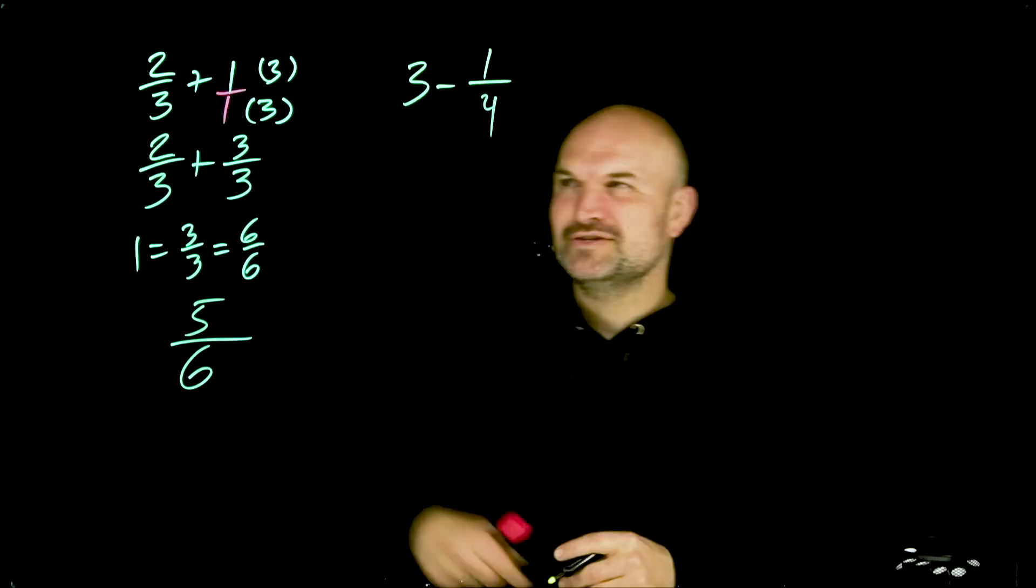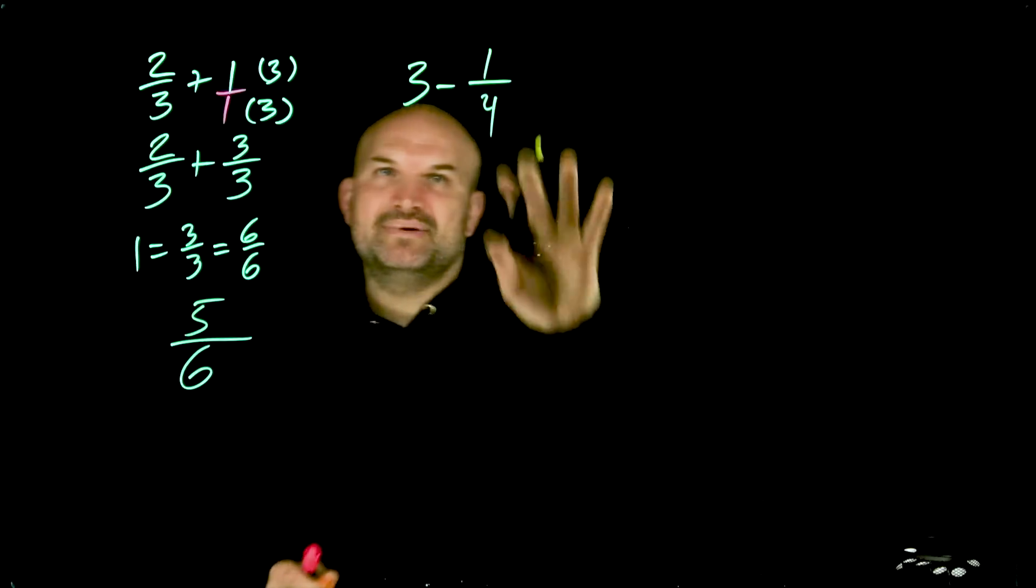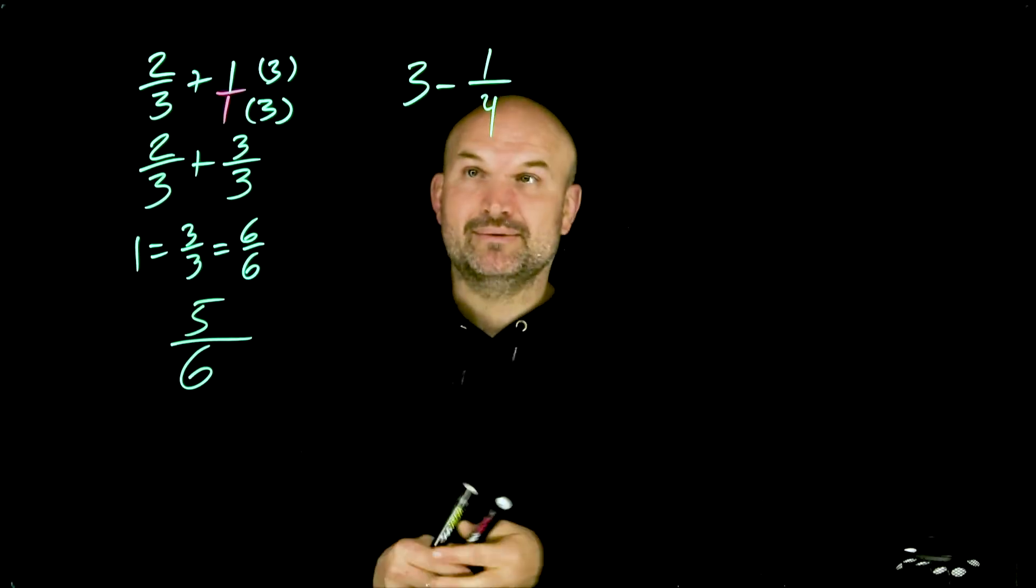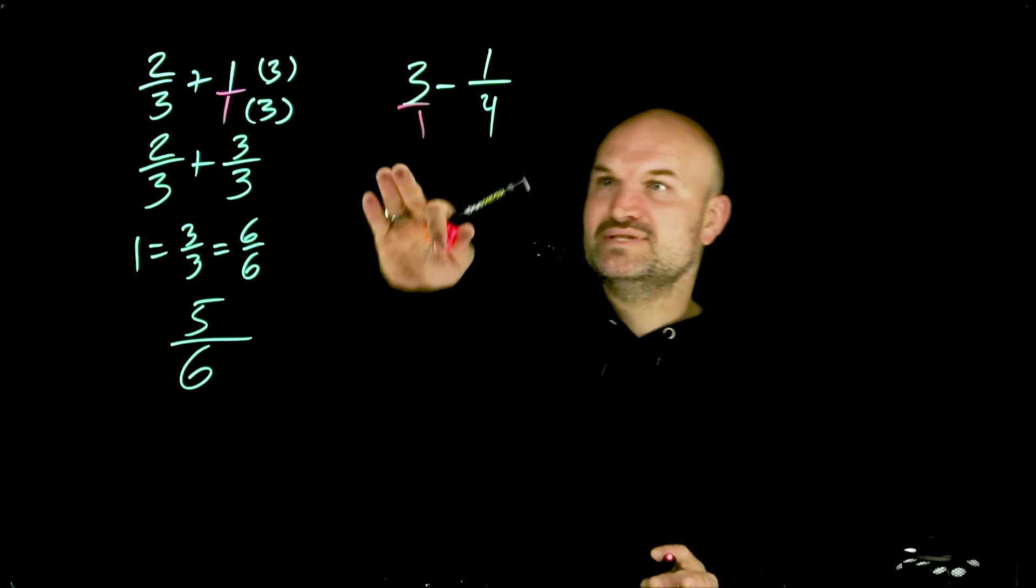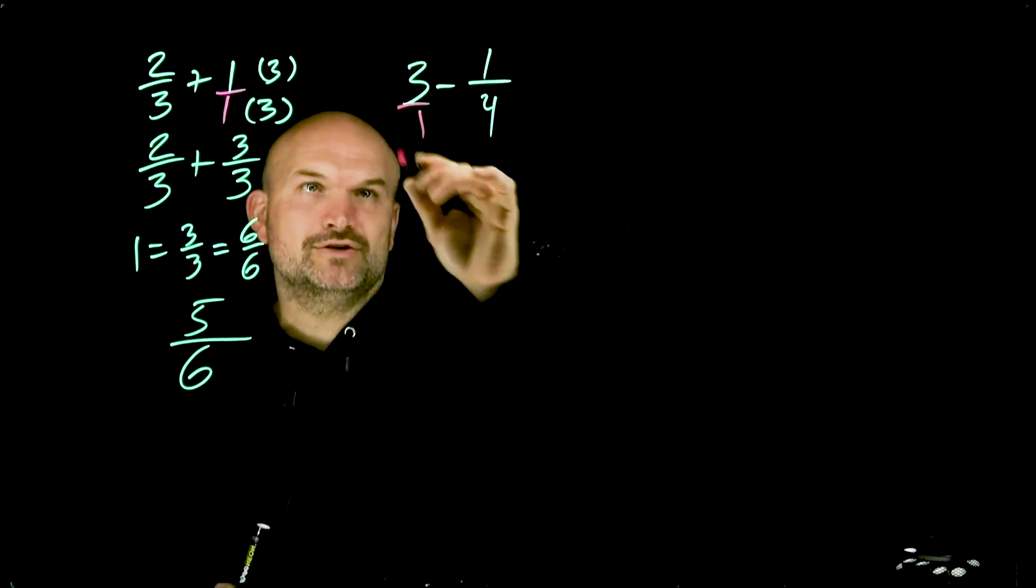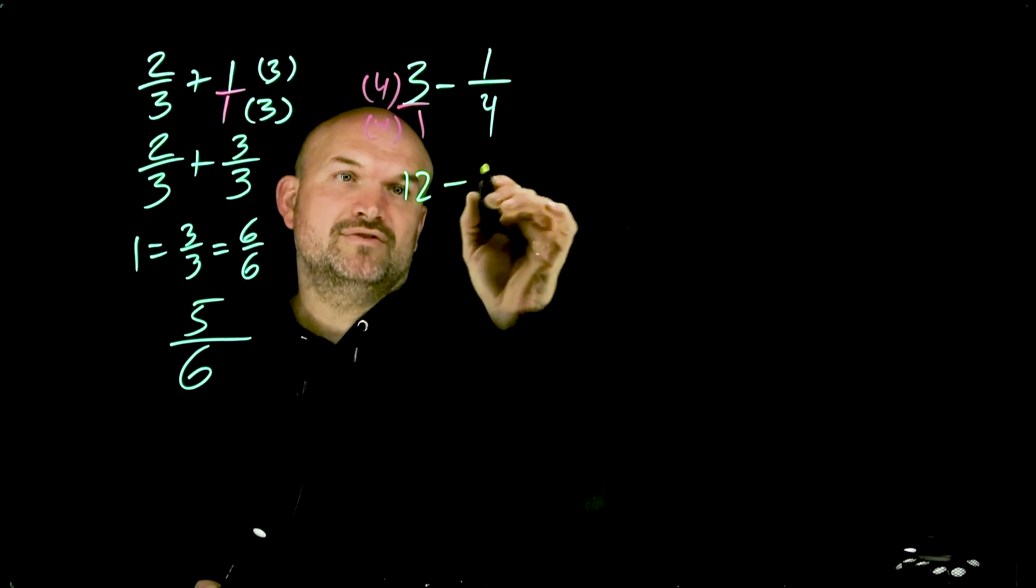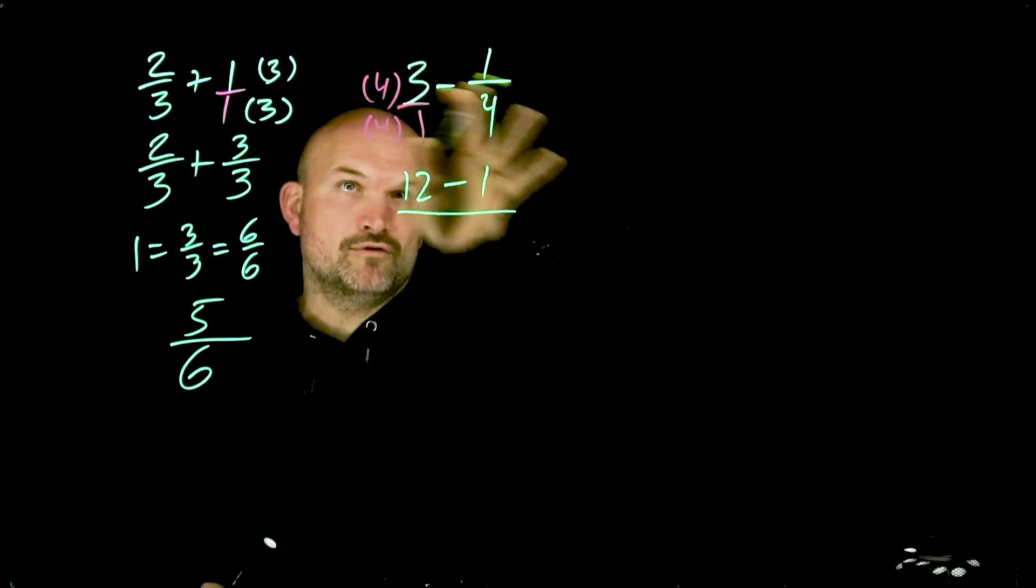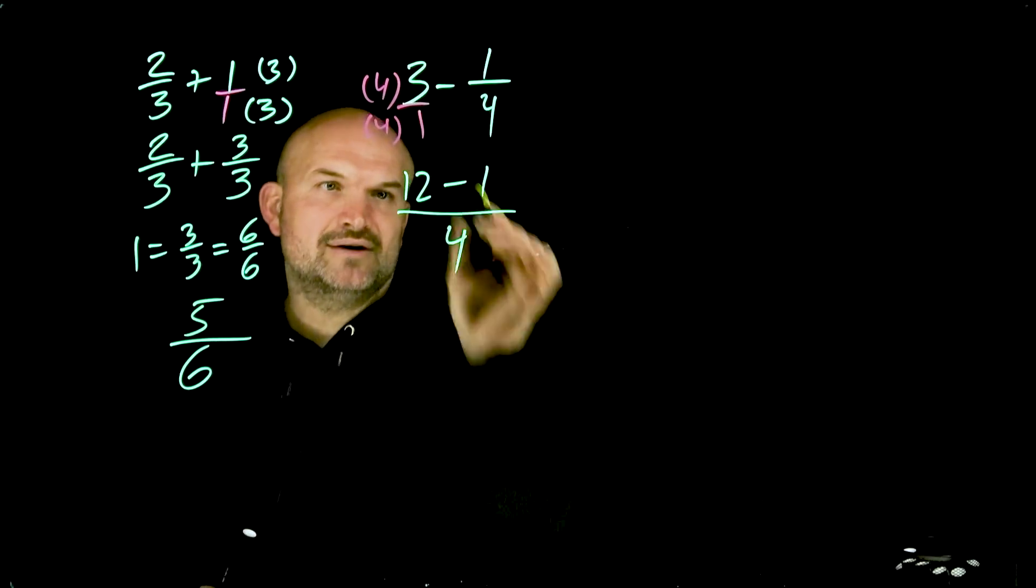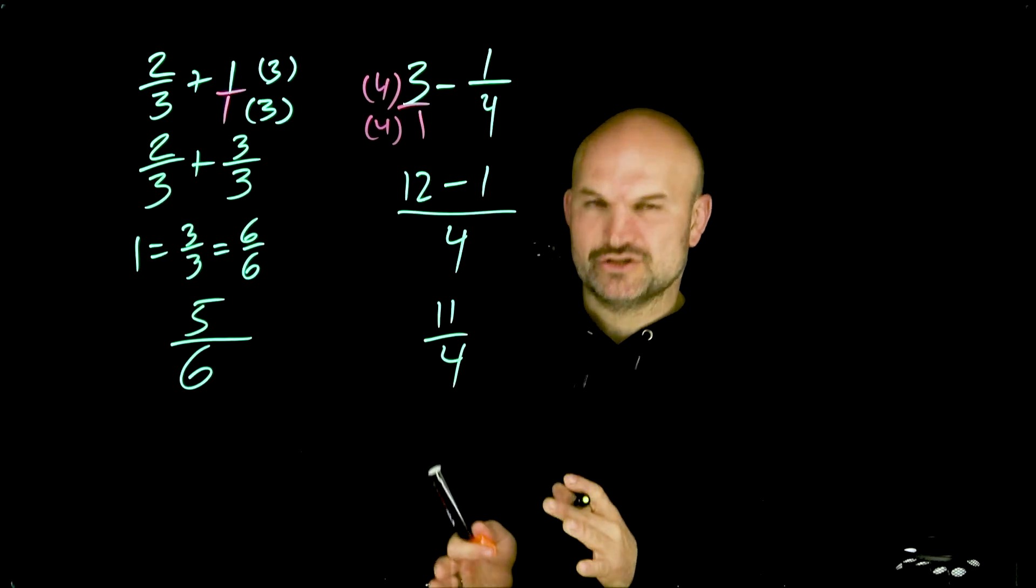So 3 - 1/4. Usually students get the one because they like rewriting things as 3/3, 6/6, right? But then they get to a problem like this and then again, they totally forget. But remember, all integers can be rewritten as fractions. Now in this case, to get to your common denominator of four, we're going to do the exact same thing we did over here. We just don't have a one in the numerator. So in this case, I'm going to multiply by 4/4. Four times three is going to be 12 - 1. And you can rewrite that over your common denominator of four, right? Or you could do 12/4 - 1/4. In this case, now you can simplify: 12 - 1 is going to be 11/4. So that is some very basic ones with addition and subtraction.